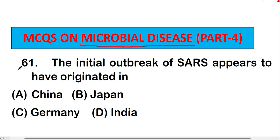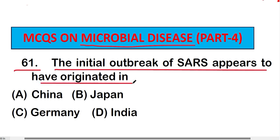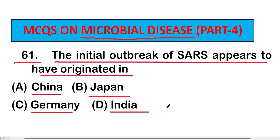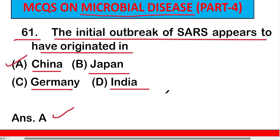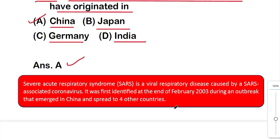Question number 61: The initial outbreak of SARS appears to have originated in — option A: China, option B: Japan, option C: Germany, or option D: India. SARS means Severe Acute Respiratory Syndrome. The correct answer is option A, China.